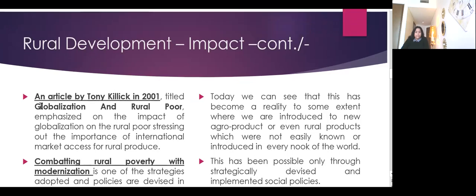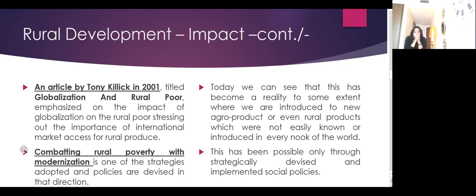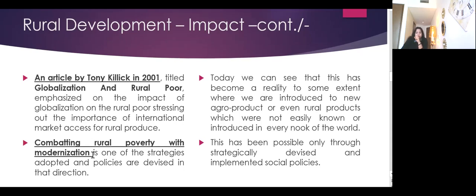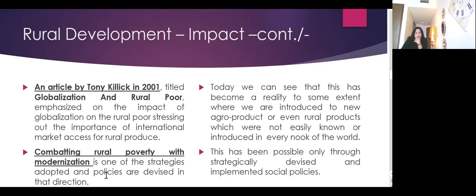There is an article by Tony Kilek in 2001, titled 'Globalization and Rural Poor' — you can Google it, and it's also mentioned in your textbook. This article emphasized the impact of globalization on the rural poor, stressing the importance of international market access for rural produce. Way back in 2001, he stressed international market access. Combating rural poverty with modernization is one of the strategies adopted, and policies are devised in that direction. Today, we can see this has become a reality to some extent.